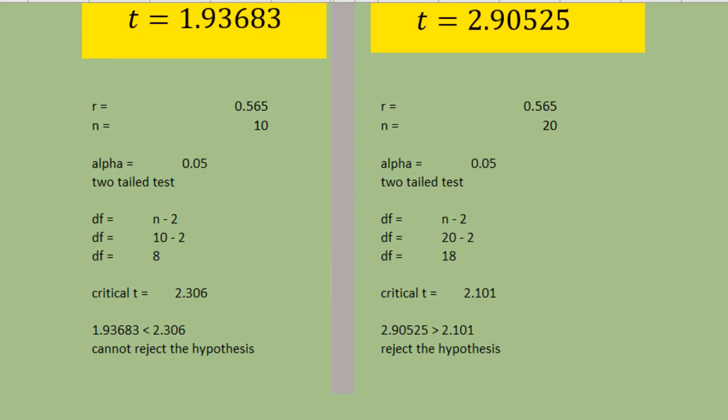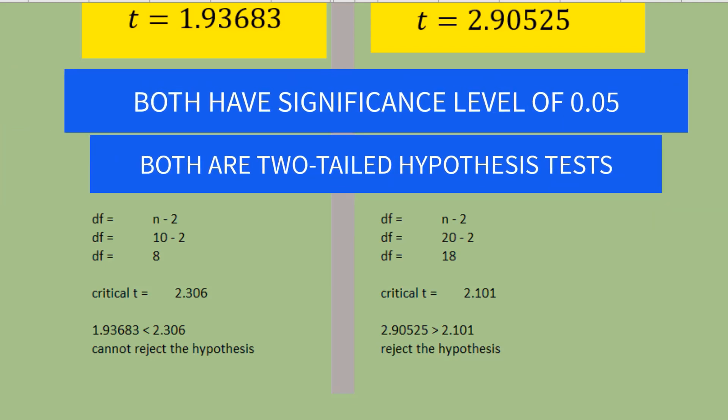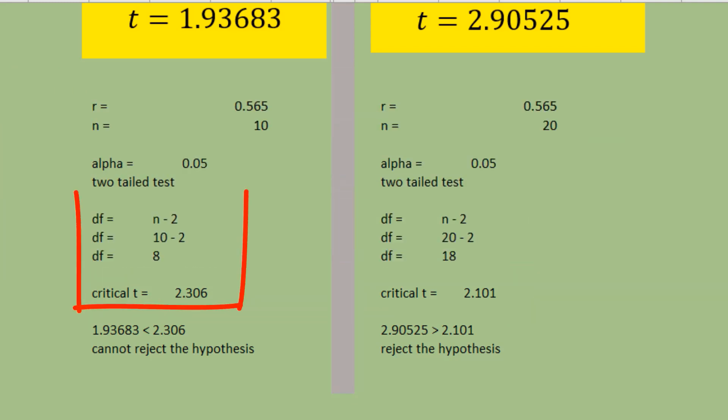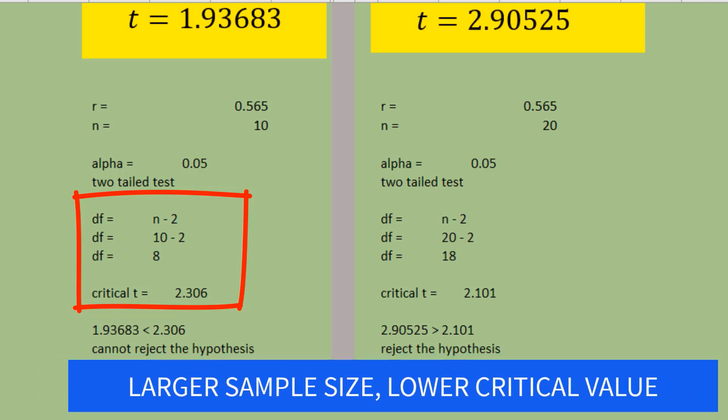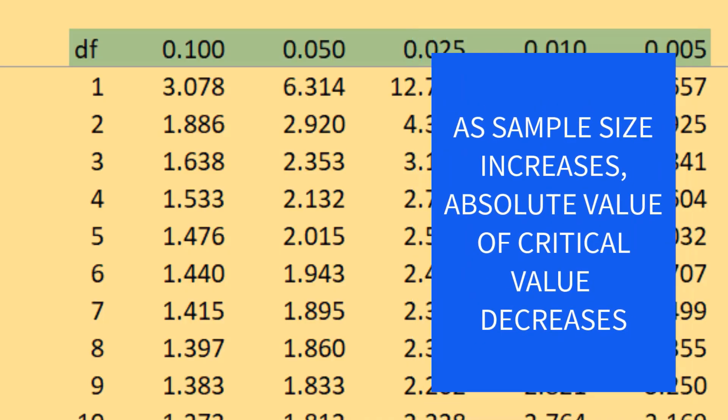Take note also that although both have a significance level of 0.05 and two-tailed tests, their critical values are different. The sample size of 10 results in degrees of freedom of 8 with critical value of 2.306. The sample size of 20 results in degrees of freedom of 18 with critical value of 2.101. Looking at the table,